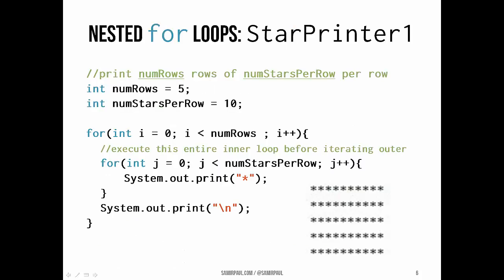Let's take a look at a couple of examples of for loops that print things. Here's star printer 1 — we're going to print five rows of 10 stars each. We have nested for loops: one for loop inside another. The outer for loop runs num_rows times — i starts at 0, condition is while i is less than num_rows, incrementing each time, so it runs five times. The inner for loop runs each time the outer loop runs, and it runs num_stars_per_row times — so 10 times. We go through the inner loop 10 times for each row we print.